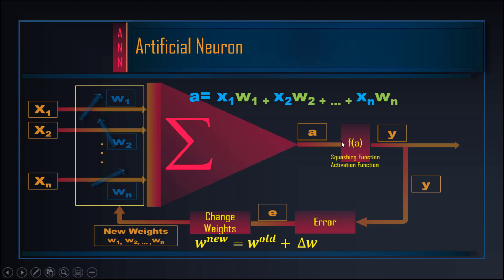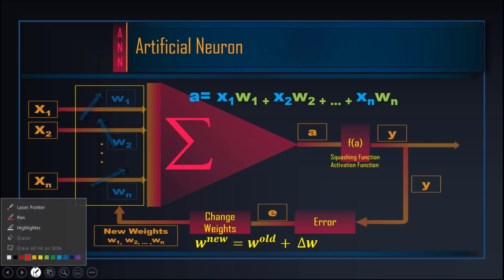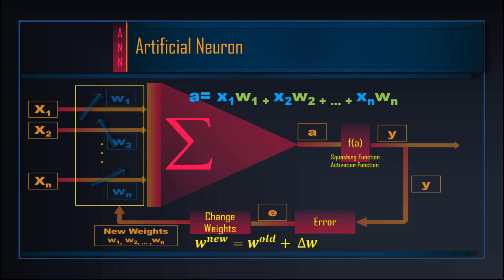In the previous video, we covered what the fundamental functionality or working of an artificial neuron is. We saw that an artificial neuron has multiple inputs.